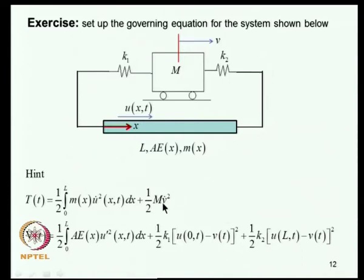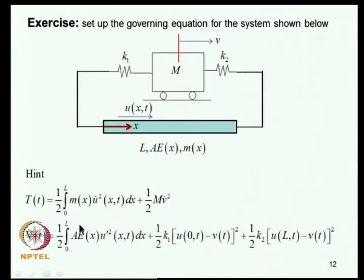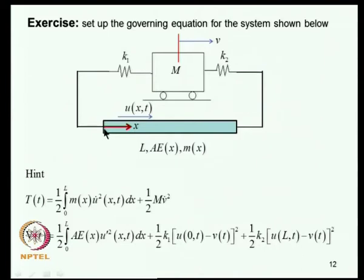A slightly more involved example has two springs and an additional inertial element. The expressions for kinetic energy and potential energy are provided as an exercise with hints. Working through this yields the field equation, the equation of motion for the discrete mass, and boundary conditions. At X=L there is a force through K2 and at X=0 there is a force through K1, as expected from the variational formulation.